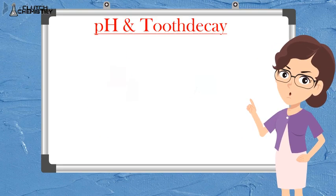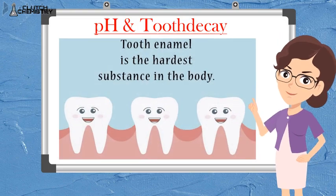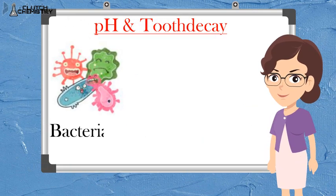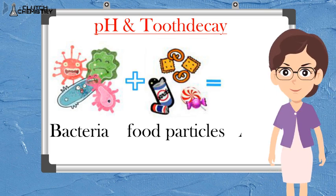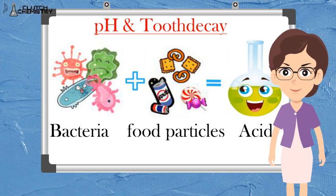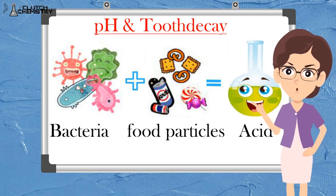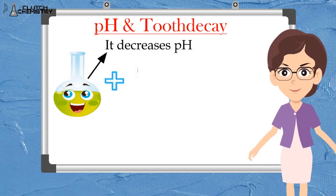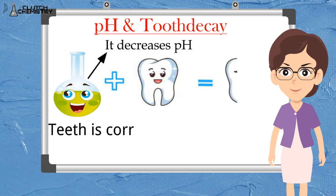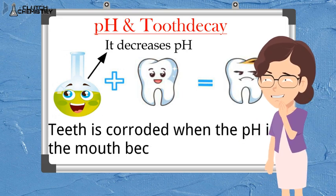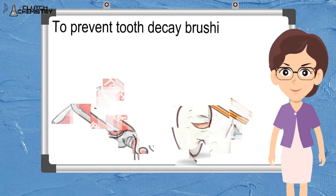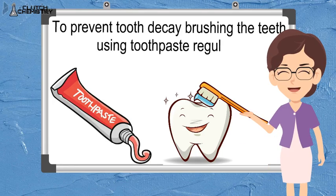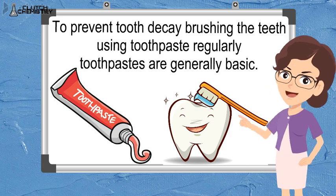Now if I relate pH and tooth decay: tooth enamel is the hardest substance in our body, and it is made up of calcium phosphate. The bacteria present in our mouth produce acid during the degradation of sugar and food particles, which sometimes remains in our mouth. This reduces the pH, and if our mouth's pH goes below 5.5, the teeth start to corrode and get damaged. So we should regularly use toothpaste, which is generally basic and neutralizes the excess acid.